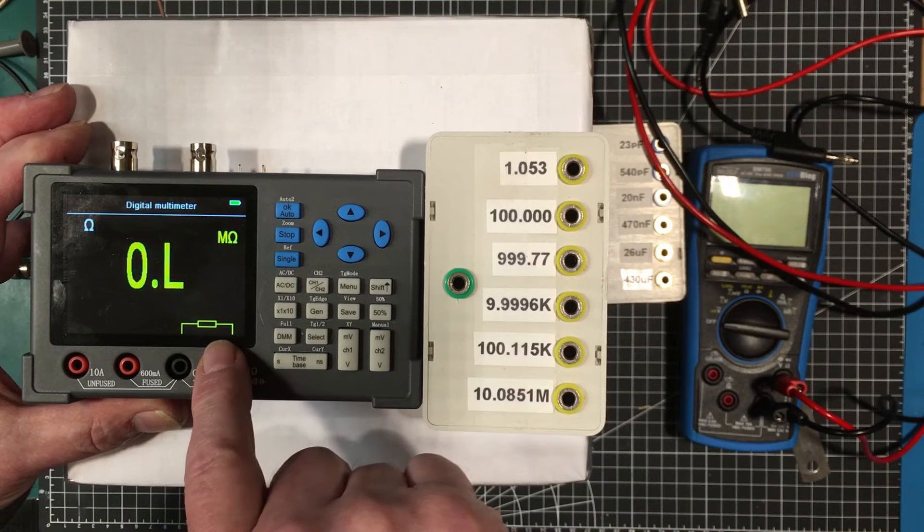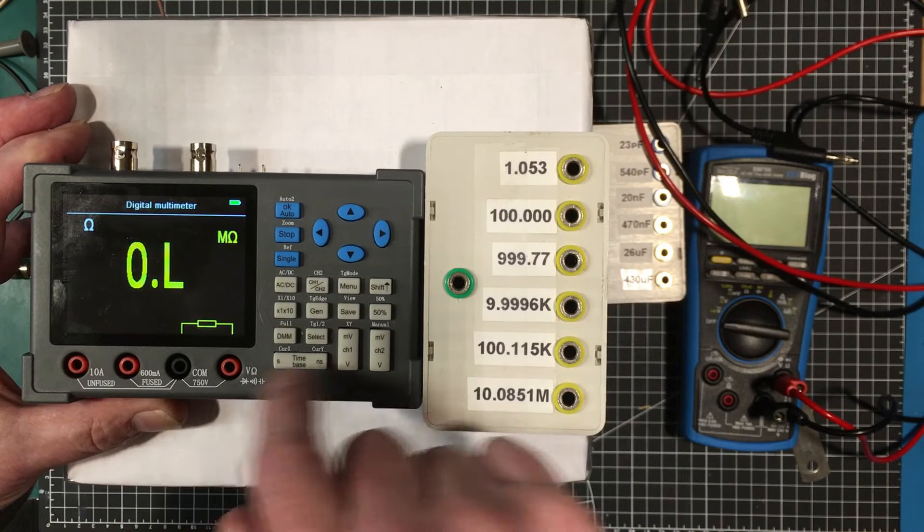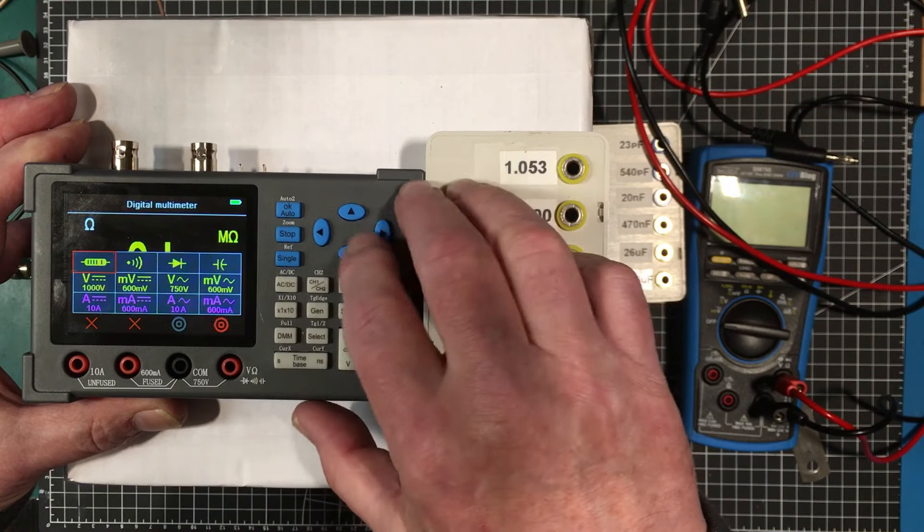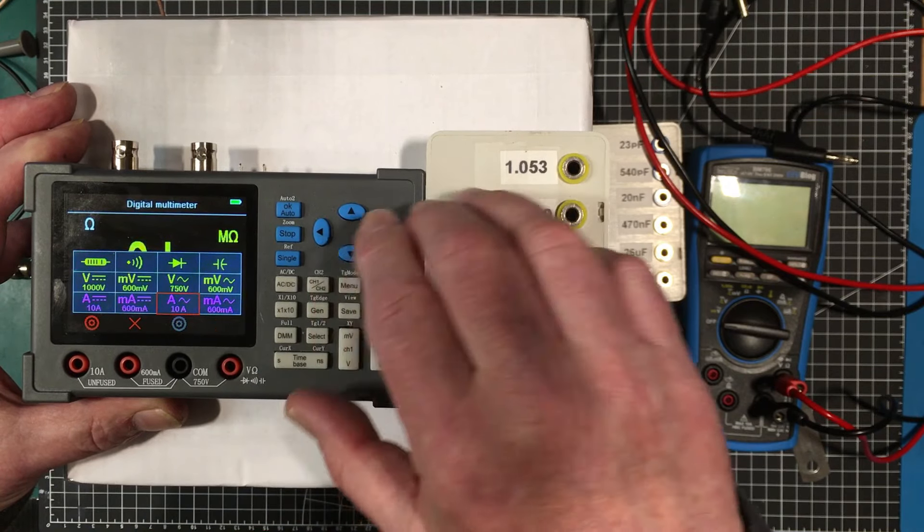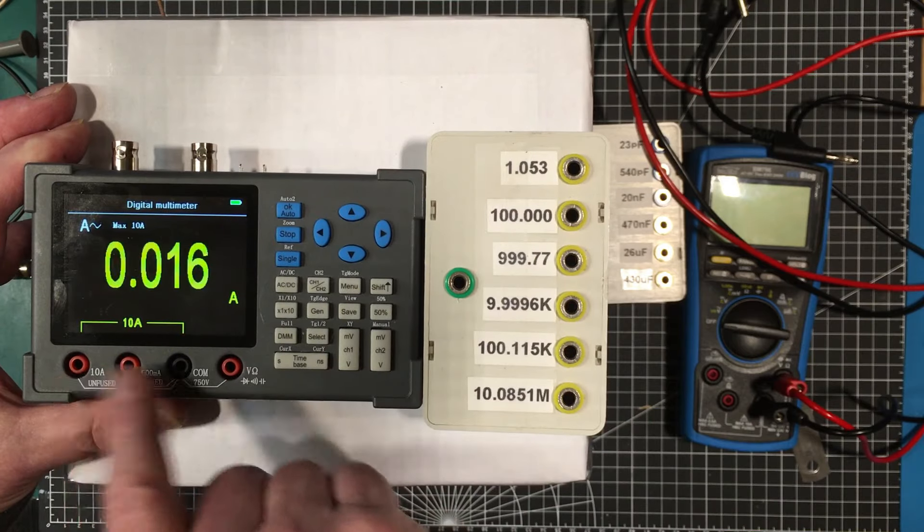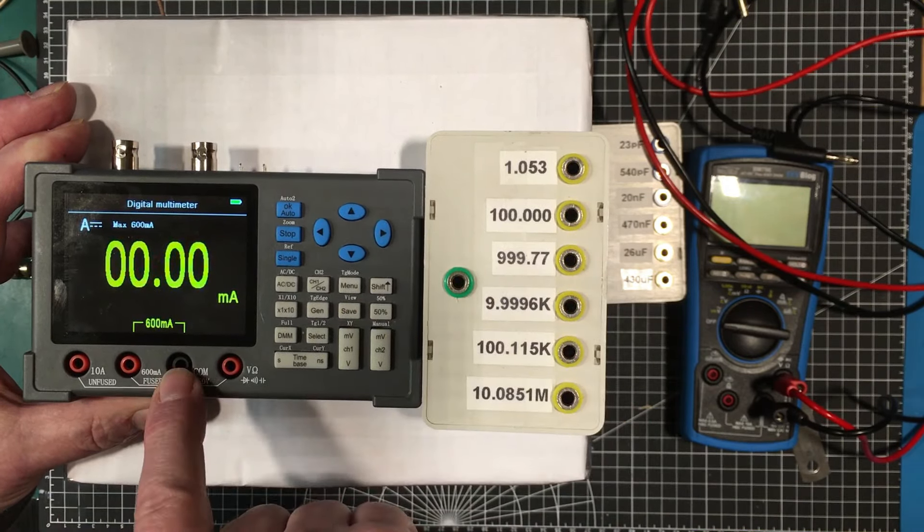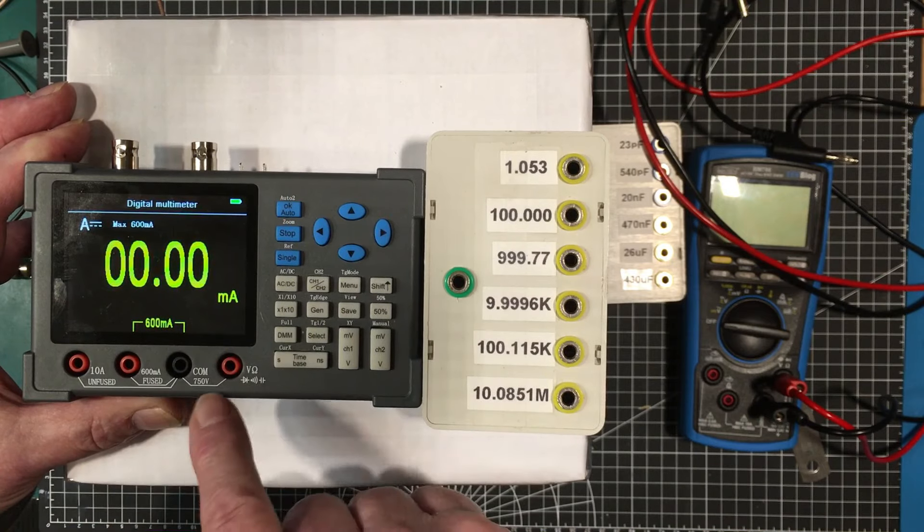It tells you where to put the probes for the kind of measurements you're doing. If we were to select one of the current ranges, let's go down there to amps, it'll tell you where to put the probes in. It tells you the maximum, 600 milliamps. That's pretty good.